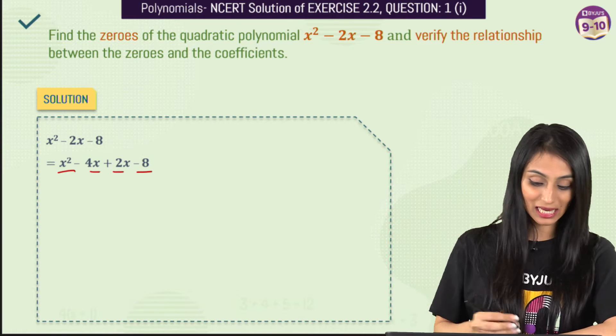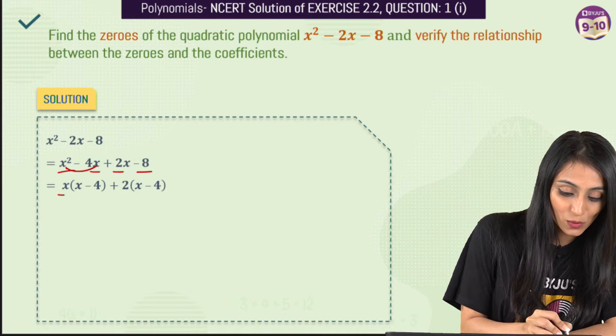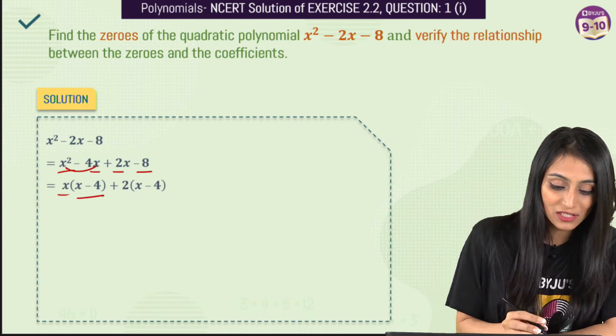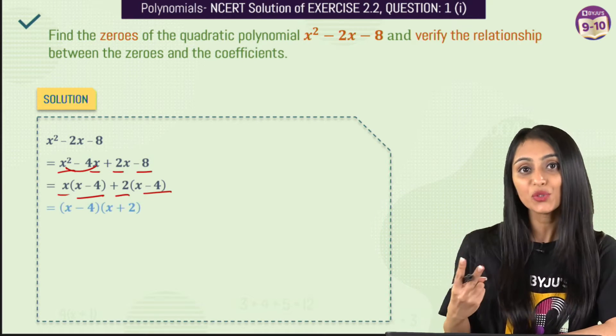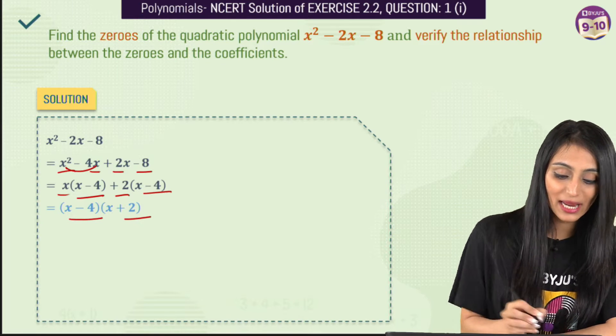Now we are going to take common from the consecutive term, so x would be common from here, so this would be x minus 4 plus 2x minus 4. So we get two factors which is x minus 4 times x plus 2.